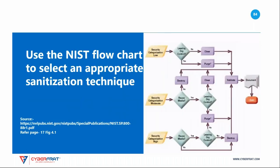Here is a flowchart from NIST that can help you make decisions about what type of sanitization technique to use. It is widely used throughout government and industry. You begin the flowchart at one of three locations depending upon the classification of information that was on the media. Then you walk through a series of decision points based upon whether you plan to reuse the media, and whether that reuse will take place outside of your organization. The flowchart then helps you make a decision about clearing, purging, or destroying the media.